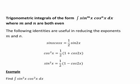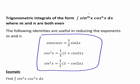In this recording, we look at trigonometric integrals where the integrand is a power of sine x multiplied by a power of cosine x, where both of them are raised to even powers. In this situation, the following three identities are useful in reducing the exponents m and n. Once we've done that, we usually can use integration by substitution or other methods to evaluate the integral.